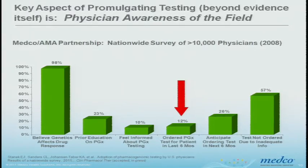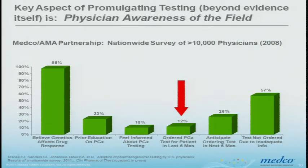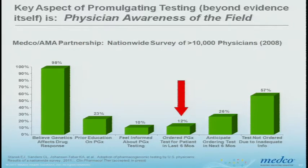One of the big problems with promulgating testing beyond figuring out the evidence is physician awareness of the field. We did a 10,000 physician survey with the American Medical Association a couple years ago — these data are in press currently. Good news: 98% of American physicians do believe genes relate to drugs. But only about 10% of physicians feel comfortable enough to even order a test. 90% don't feel comfortable and don't remember having any training or education in genetics. That's a real problem.